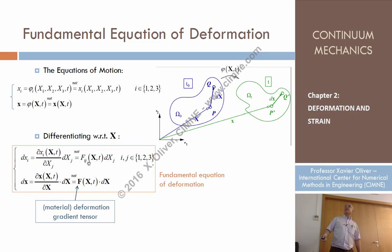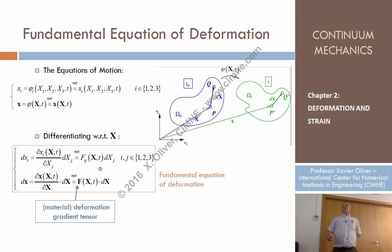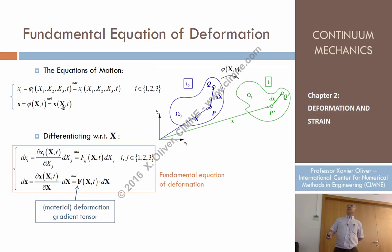Since the repeated index is J, this is nothing else than the dot product of tensor F times differential of X. In other words, the differential of small x can be expressed as the product of a second-order tensor F dot-multiplied by differential of capital X.